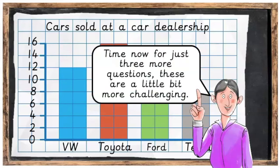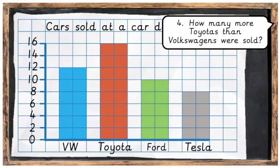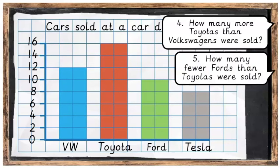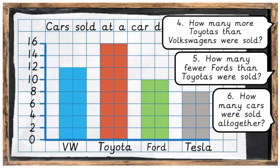Time now for just 3 more questions — these are a little bit more challenging. Question 4: How many more Toyotas than Volkswagens were sold? Question 5: How many fewer Fords than Toyotas were sold? And Question 6: How many cars were sold altogether? Press pause, see if you can answer these questions, then press play when you are ready.